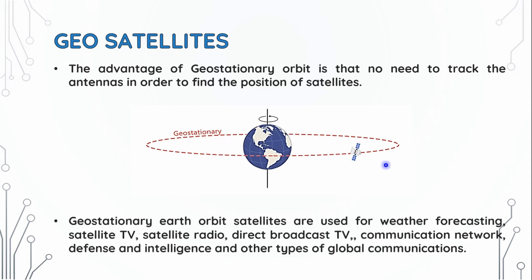Geostationary earth orbit satellites are used for weather forecasting, satellite TV, satellite radio, direct broadcast TV, communication networks, defense and intelligence, and other types of global communication. Mainly, geostationary earth orbit is used for global communication and constant communication.